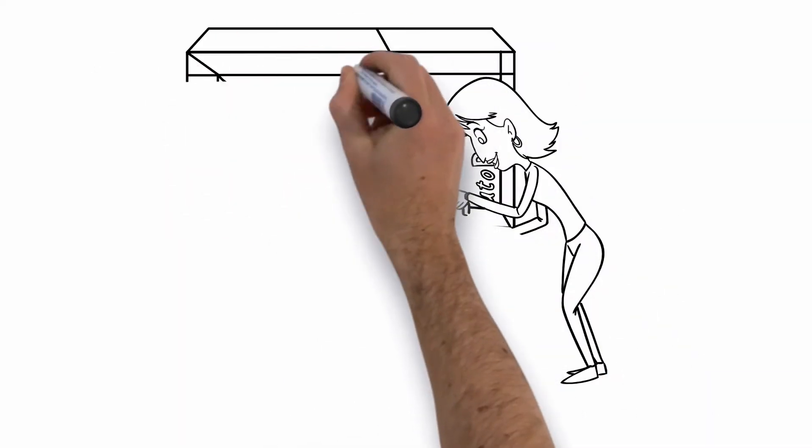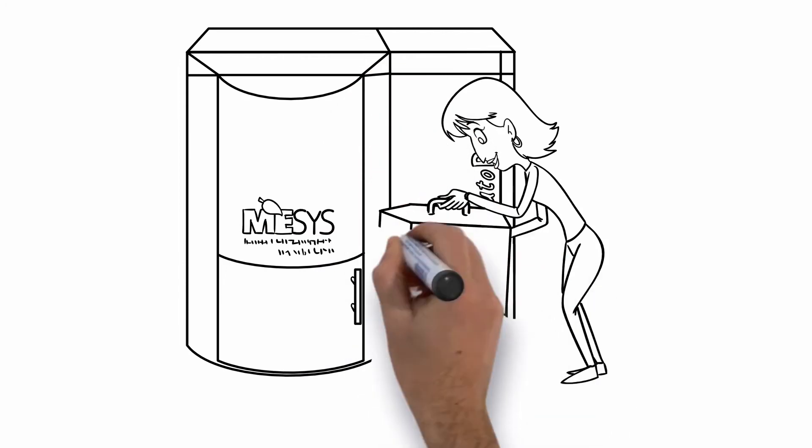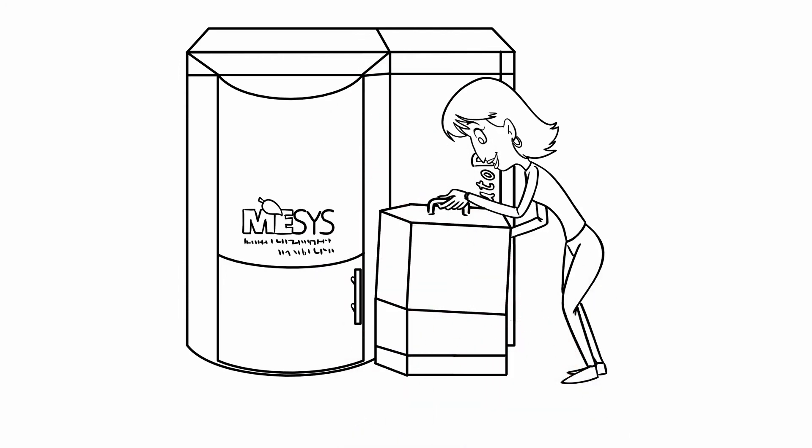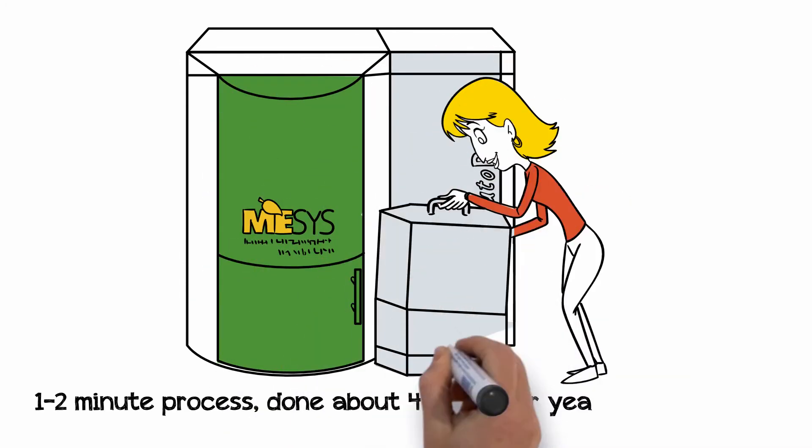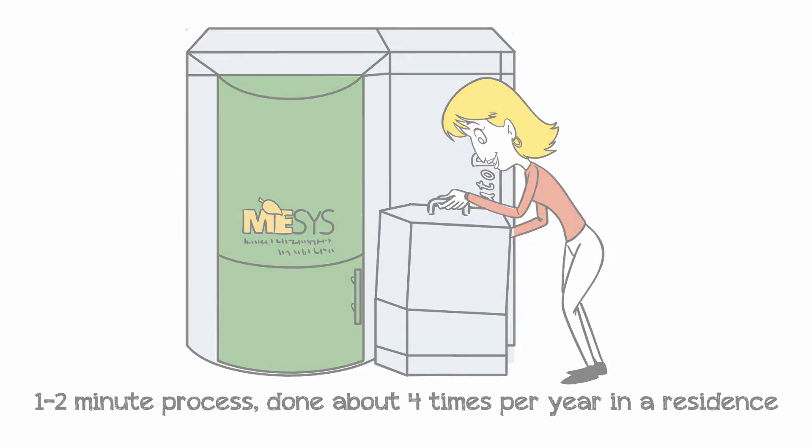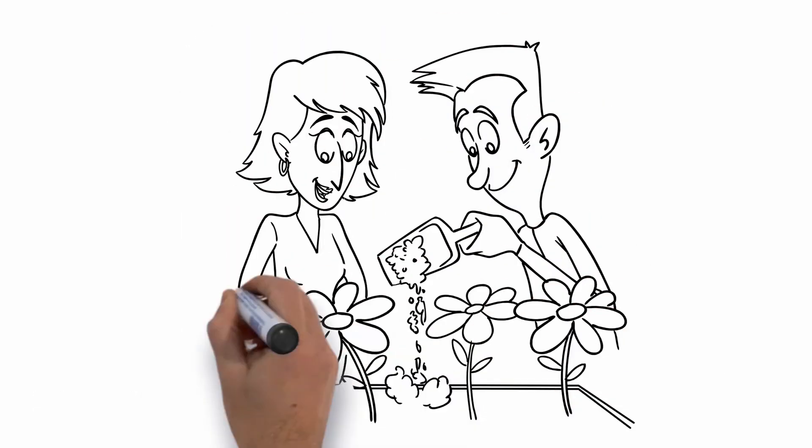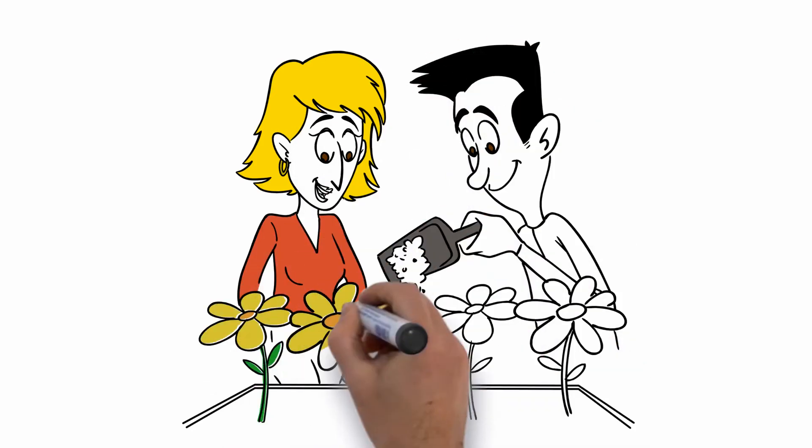Pellet ash is automatically removed from the Auto Pellet and stored in a specially designed ash container. Emptying the ash container is a clean and easy one-to-two-minute process, done about four times a year in a residence, and the ash is great to use on your lawn or garden.